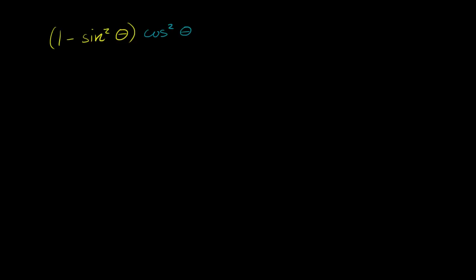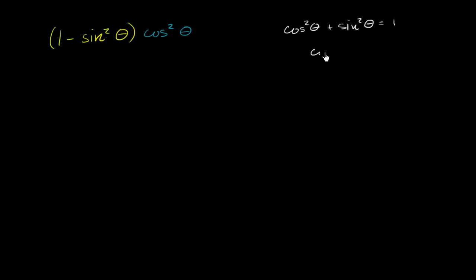The most fundamental trig identity — this comes straight out of the unit circle — is that cosine squared theta plus sine squared theta is equal to 1. And if we subtract sine squared theta from both sides, we get cosine squared theta is equal to 1 minus sine squared theta.